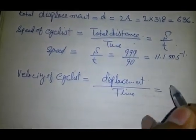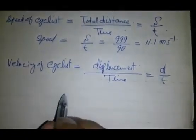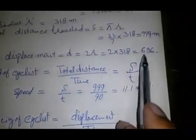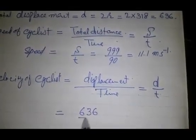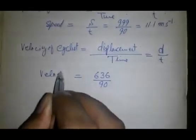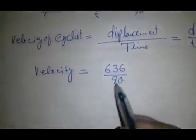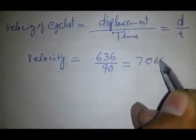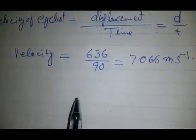Which equals d over t, equals displacement 636 over 90, equals 7.066 meters per second. Please subscribe to my channel.